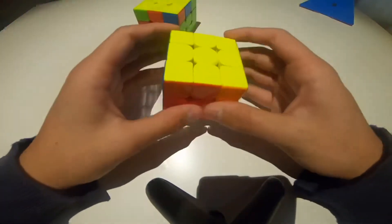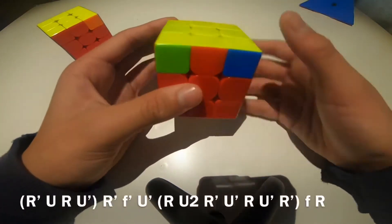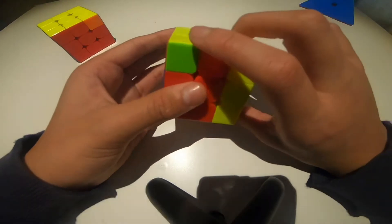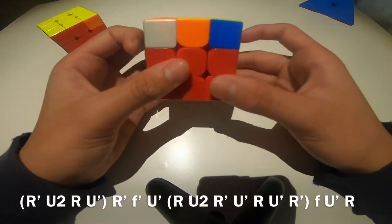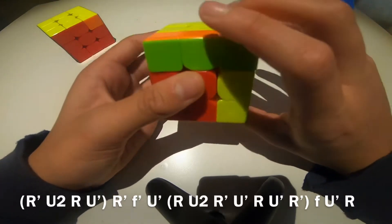I'm not the best at executing it. I'll give you a second to guess what this algorithm might be. So instead of starting R' U R, you start R' U2 R. And then the rest is pretty much the same, except here you add a U'.